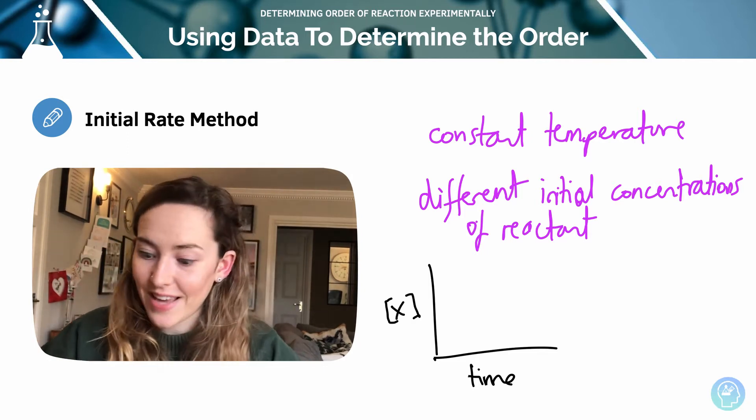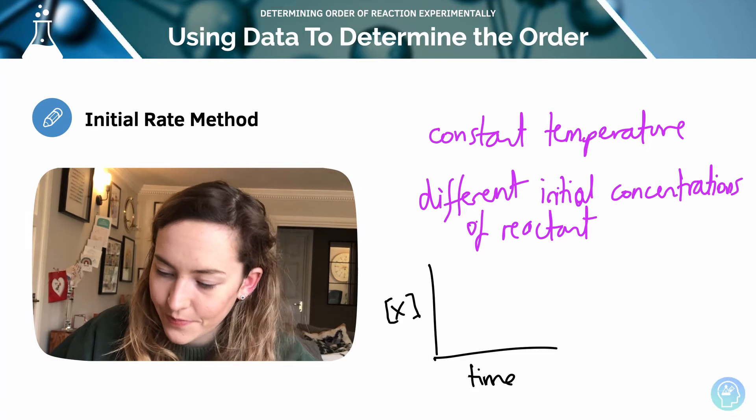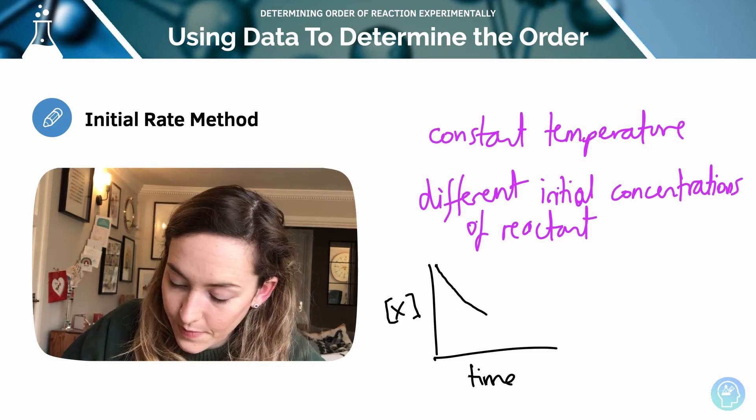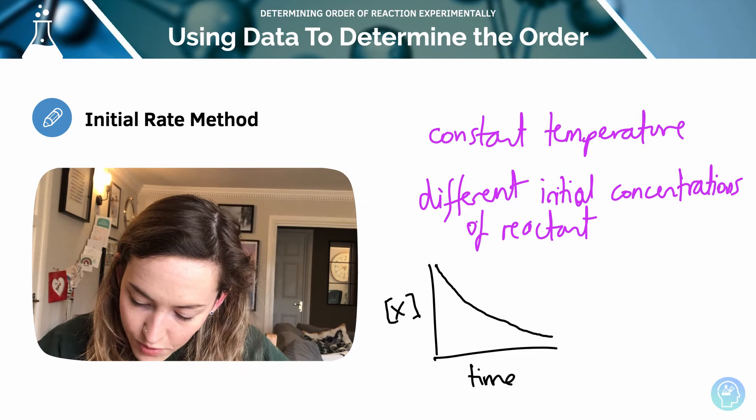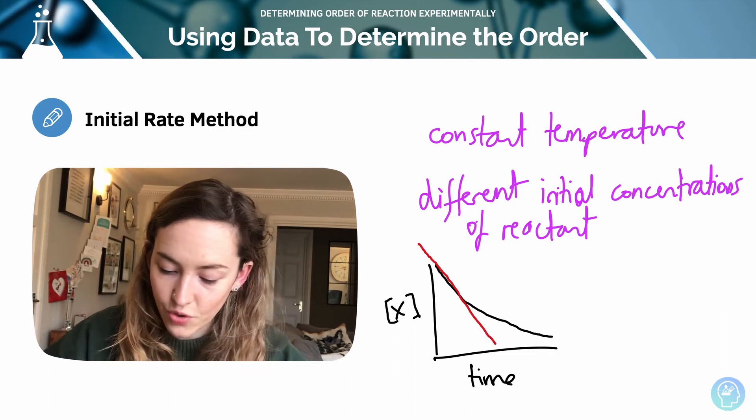And we can calculate the initial rate. For example, in this particular graph, we can draw a tangent right at the start and calculate that initial rate.